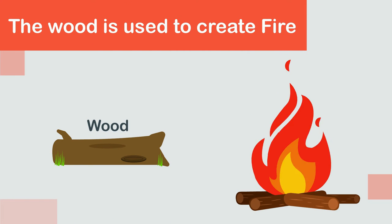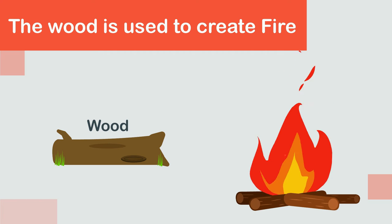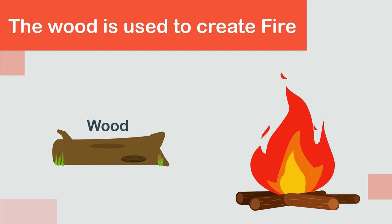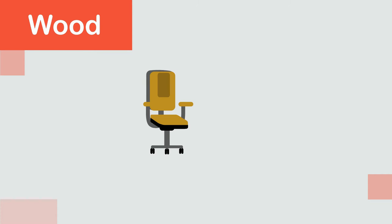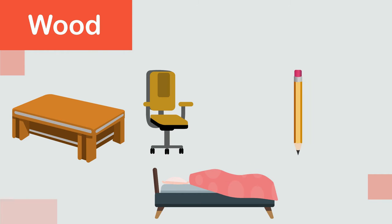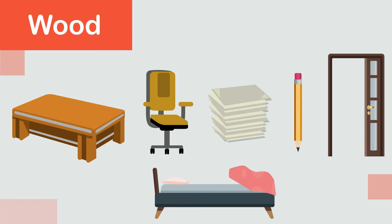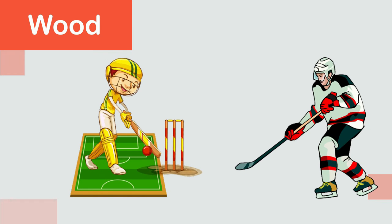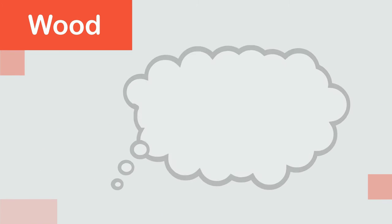Wood: we get wood from trees such as pine, ash, bamboo, and oak. Wood is used to create fire and for making many things that we use in daily life, such as chairs, tables, beds, pencils, paper, doors, etc. It is also used in making sports items like cricket bats and hockey sticks.